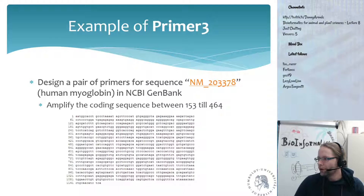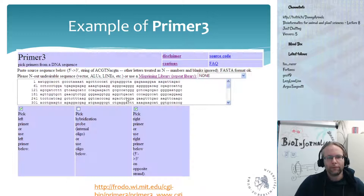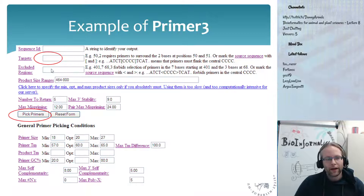Welcome back everyone. If you want to design a primer for the human myoglobin gene and you want to amplify the coding sequence between 153 and 464 base pairs, the first thing you need to do is get the sequence. What you do then is copy-paste the sequence into Primer3, and then you say I want to pick a left primer, I want to pick a right primer, and then you want to specify which region of the gene you want to target.